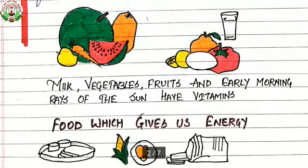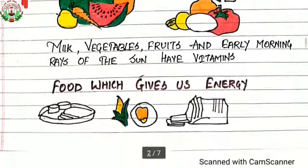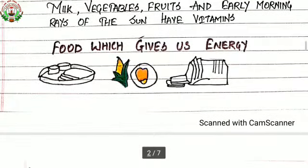Milk, vegetables, fruits and early morning rays of the sun have vitamins. Foods which give us energy include chapati, maize and bread — these are some examples.